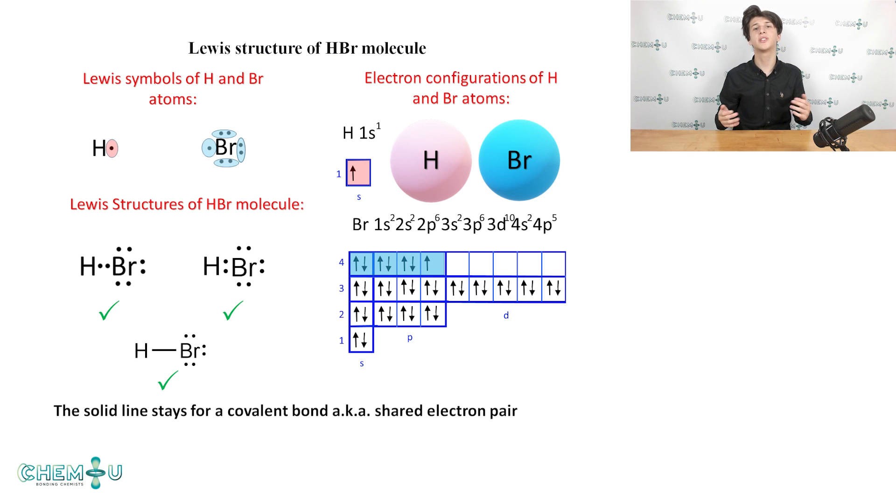One limitation of representing electrons as dots and covalent bonds as two dots shared between two atoms is that the shared electrons always appear to be equally shared, but it's not always like this. Let's move on to the next to last topic for today.